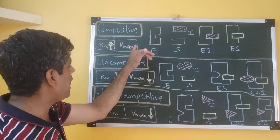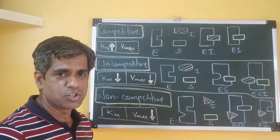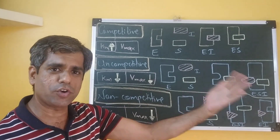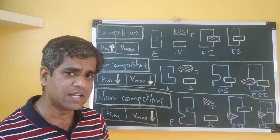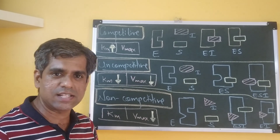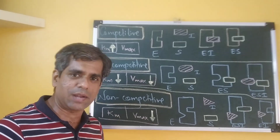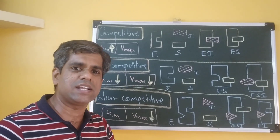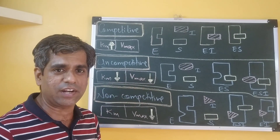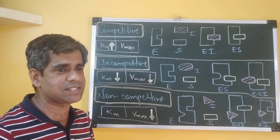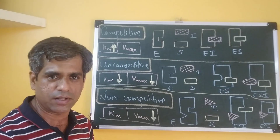Vmax is reached at a higher concentration of substrate. So when you have a high concentration of substrate, the amount of inhibitor is comparatively less, and the probability of the enzyme binding to the inhibitor is highly reduced. So apparently, there is no effect on Vmax in the presence of a typical competitive inhibitor.